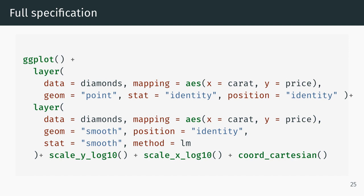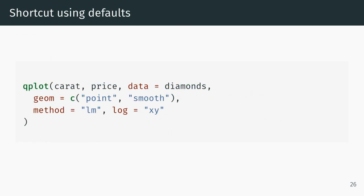This is exactly the same specification giving exactly the same plot but using defaults as a shortcut. The first position expects the x-coordinate, the second position expects the y-coordinate. Then we've specified explicitly data equals diamonds, geom equals a combination of point and smooth, which tells us there are two layers, two geoms. Method only applies to the smooth geom, that's the LM method, and log applies to the scales.